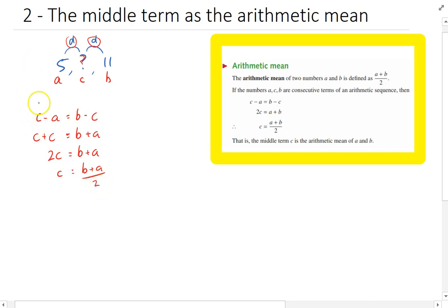Now this is a neat little proof that in order to find that middle number, if I want to know what that middle number is, all I need to do is add those two numbers together and divide them by 2. That's what we mean by arithmetic mean, mean as in the average.